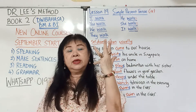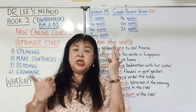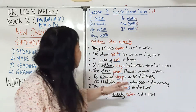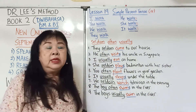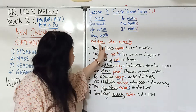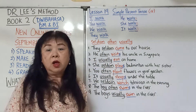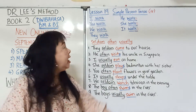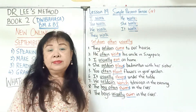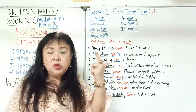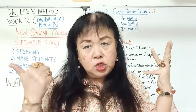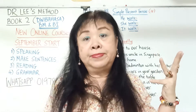For I, you, we, they — cannot put an S to the verb. For he, she, it — yes, you put an S to the verb. For this lesson, we are going to learn three more words: seldom, often, and usually. All these three words are under Simple Present Tense. That means for I, you, we, they — you don't put an S to the verb. But for he, she, it — you put an S to the verb.